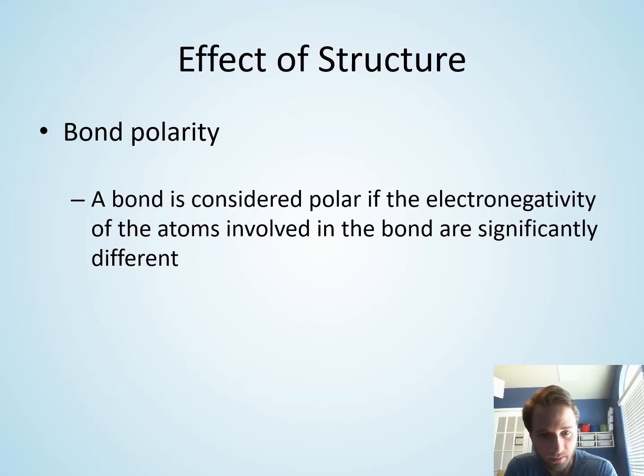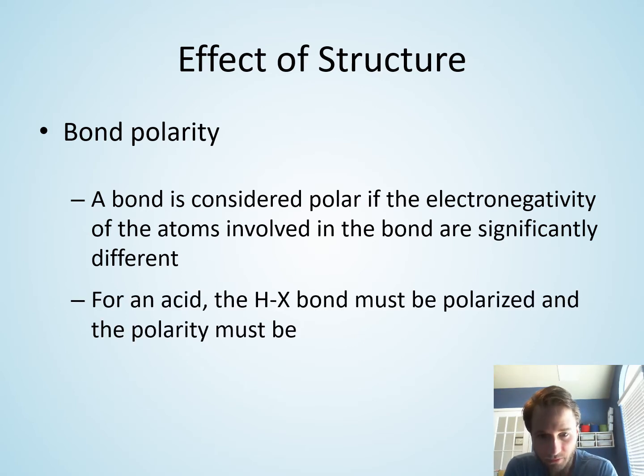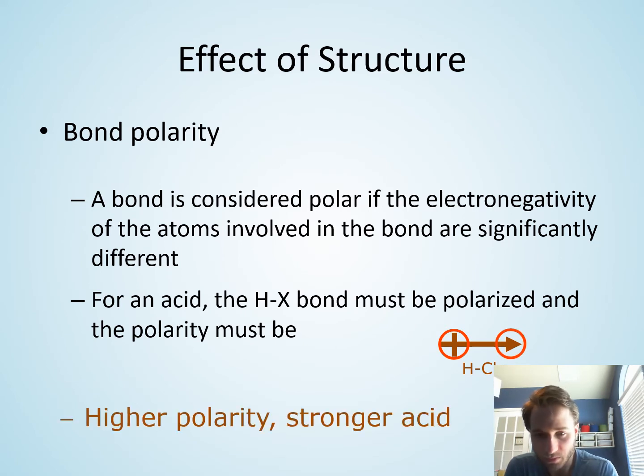So first, let's talk about bond polarity. A polar bond is a bond that has differences in electronegativity. For an acid to be acidic, you have to have a polar bond where the atom bonded to the hydrogen is more electronegative, drawing the electron from the hydrogen, making it easier to kick off an H+ ion. The typical rule here is that the higher the polarity of the bond, the stronger the acid, because the electron from the hydrogen is already being pulled away, making it easier for the molecule to kick off a hydrogen ion.